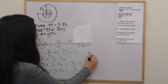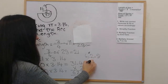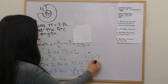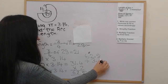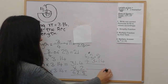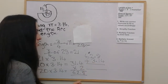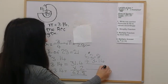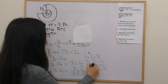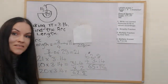So we do 62.8 plus 3.14, which gives 65.94 — and that would be centimetres because it's arc length.